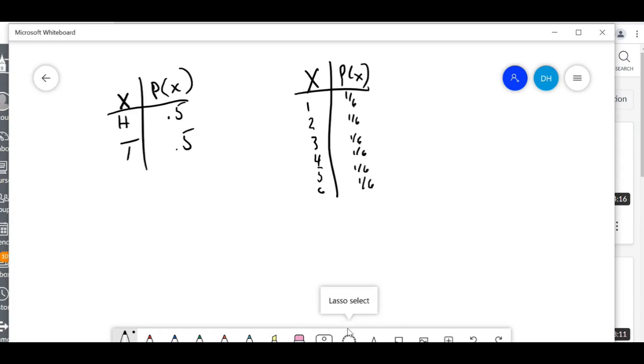So let me do it again for a dice roll. And if you see what I've done here, this is a random variable.